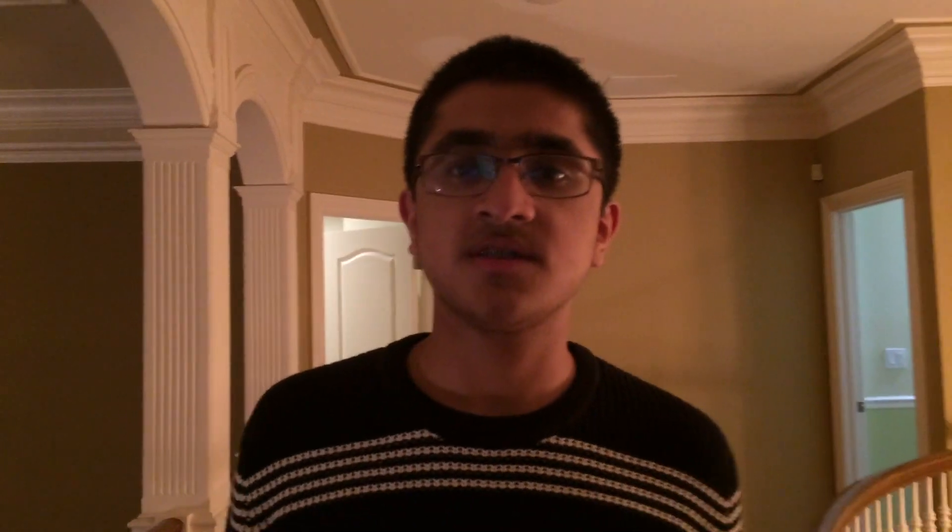By automating the curation process, OncoCurate saves time and delivers novel insights about mutations that human curators might miss. OncoCurate is a completely autonomous tool that parses through biomedical literature on PubMed, extracts information relating to cancer-causing mutations, and ranks the clinical relevance of this information. Thus, OncoCurate provides doctors with a quantitative way of determining the best treatment plan for their patients.